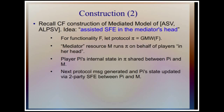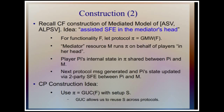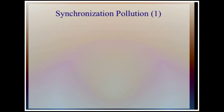The idea of assisted SFE in the mediator's head: let F be the functionality to realize, and PI be the GMW protocol for it. The resource — the mediator — runs this protocol in his head. The state of each player is secret-shared between the mediator and that player. The protocol progresses through a sequence of two-party SFEs between each player and the mediator, computing the next message and updating the player's state. We adapt this for collusion preservation by using the GUC protocol and GUC SFEs for the two-party computations.